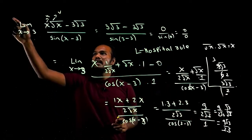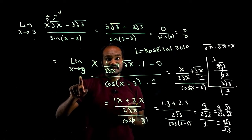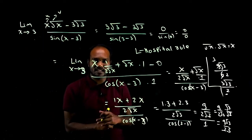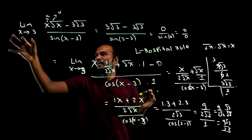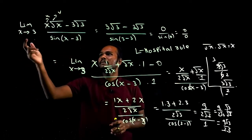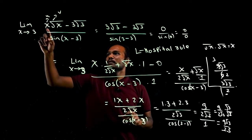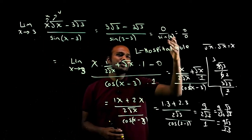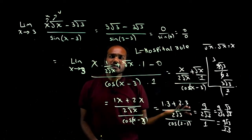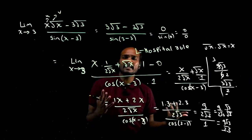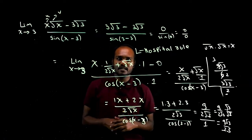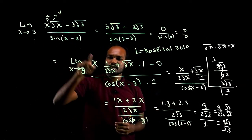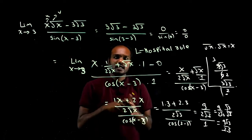To recap: the question is limit x tends to 3, x√x minus 3√3 divided by sin(x minus 3). First we substitute the limit and get 0 by 0 form. Then we apply L'Hôpital's rule — differentiate numerator and denominator separately using the UV rule.